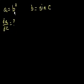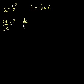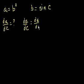We have a defined in terms of b, so we can't just take the derivative directly. That's where the chain rule comes in. The chain rule tells us that the derivative of a with respect to c is equal to the derivative of a with respect to b, times the derivative of b with respect to c.